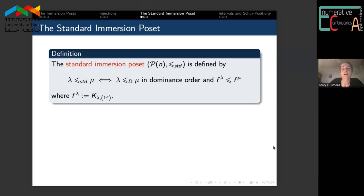In order to find maximal elements in the immersion poset, we turn to the standard immersion poset, where λ is less than μ if and only if λ is less than μ in dominance order, and the number of standard fillings of λ is less than or equal to the number of standard fillings of μ.